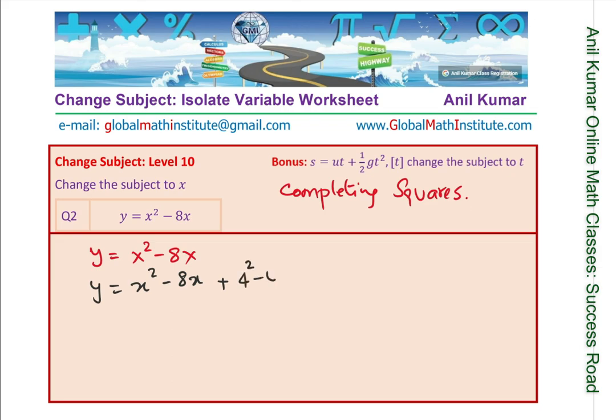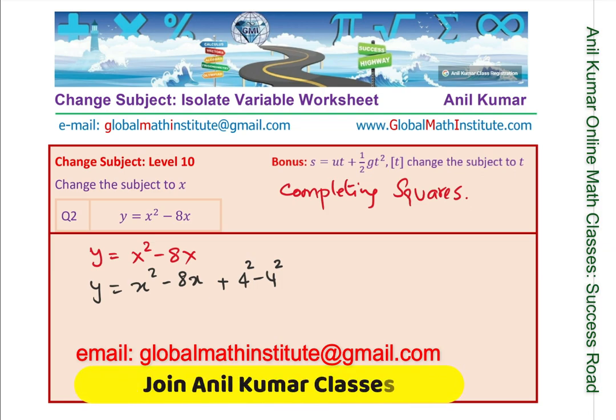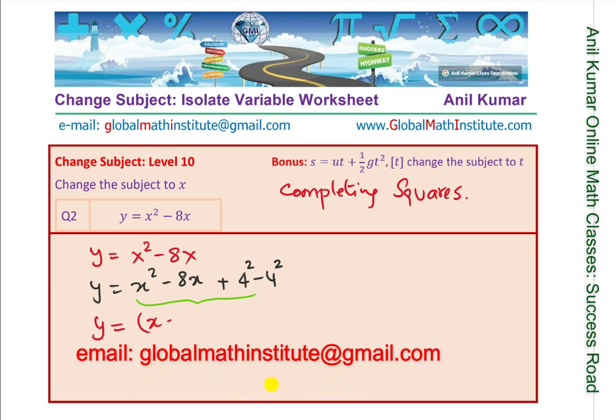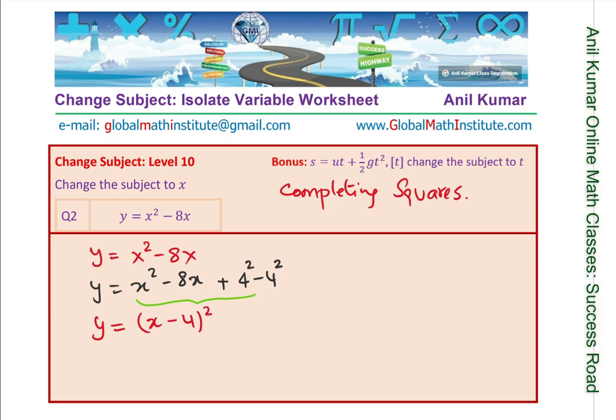That makes the three terms a perfect square. We can now write this as y = (x - 4) whole square, and this -4 square becomes -16. You can expand and check your result. This step is called completing the square. Since we added and subtracted a term as you can see here, we modified to help us make it a perfect square. Does it make sense to you?